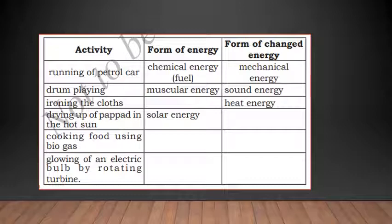Now write the changes in the form of energy in the following activities. Running of a petrol car: chemical energy is changed into mechanical energy. Drum playing: the person uses muscular energy, which is converted into sound energy. Ironing clothes: electrical energy is converted into heat energy. Drying in the hot sun: solar energy is converted into heat energy. Cooking food using biogas: the biogas provides chemical energy which is used for cooking food.